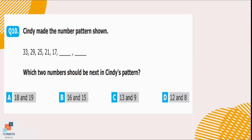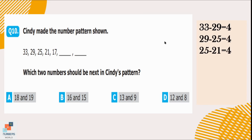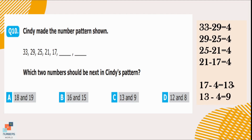Question number 10. Cindy made a number pattern. Which two numbers should come next? First, let's find the rule. If we subtract 29 from 33, the answer is 4. Similarly, subtracting the next number from the previous also gives 4. So the rule is: subtract 4 from the previous number to get the next one. The last number was 17. So, 17 minus 4 equals 13, and 13 minus 4 equals 9. Therefore, 13 and 9 are the next numbers in the pattern — option C.